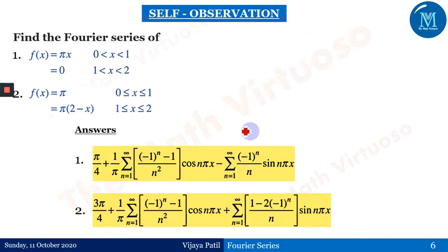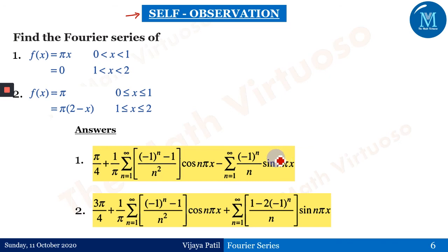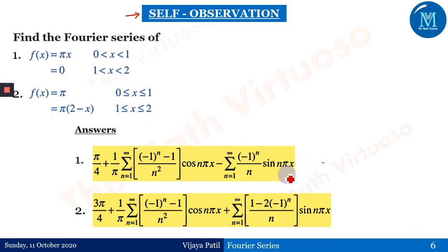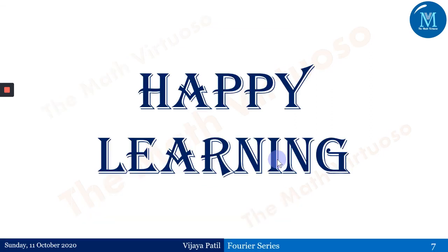For self-observation, there are two practice questions given: f(x)=πx and f(x)=π(2−x) type functions, which also require LIATE — first function, second function like a musical chair. Please go ahead and solve these, and if you have any queries write a comment so I can address them. Thank you. Happy learning.